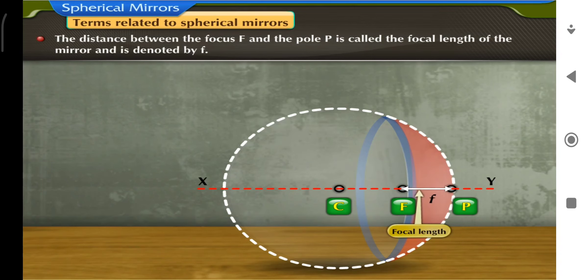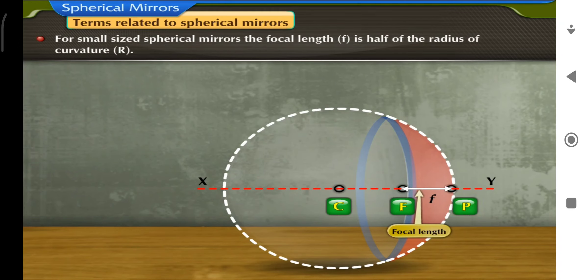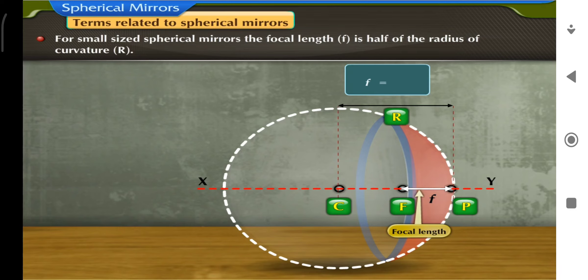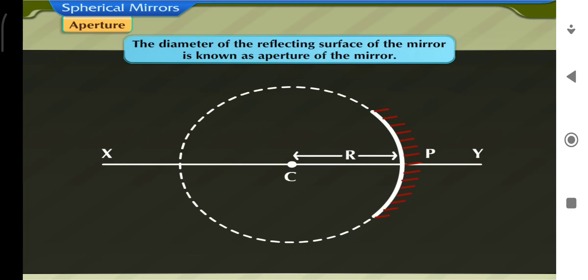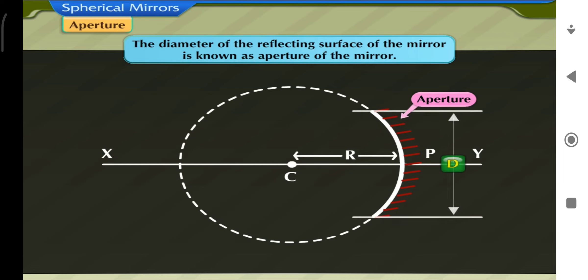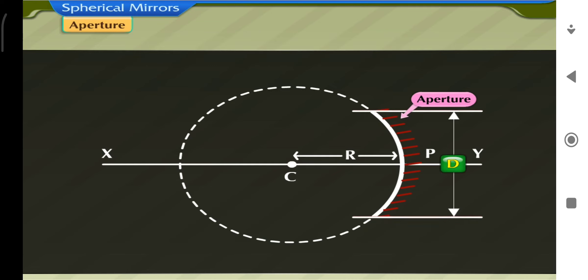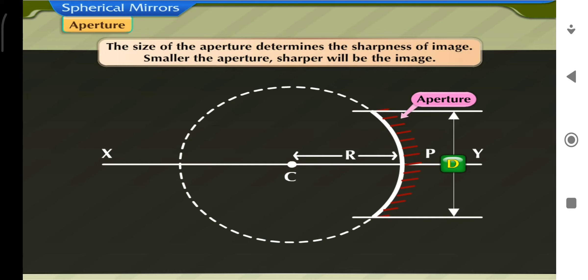The focal length is the distance between the focus F and the pole P, denoted by f. For small sized spherical mirrors, the focal length f is half of the radius of curvature R; that is, f = R/2. The aperture is the diameter of the reflecting surface of the mirror. D is the aperture of the mirror; it represents the size of the mirror. The size of the aperture determines the sharpness of the image — smaller the aperture, sharper will be the image.